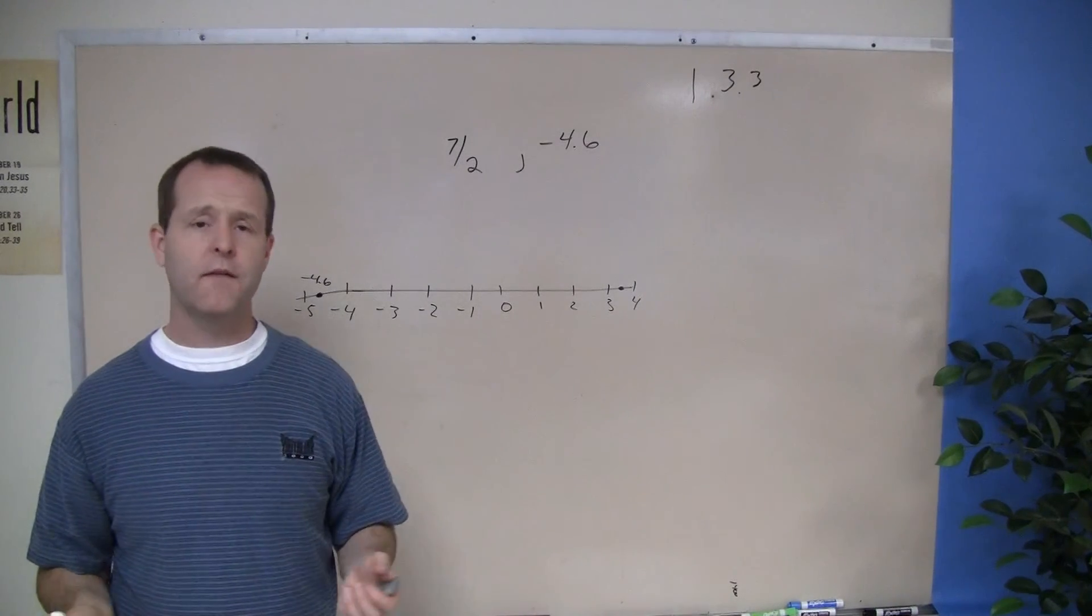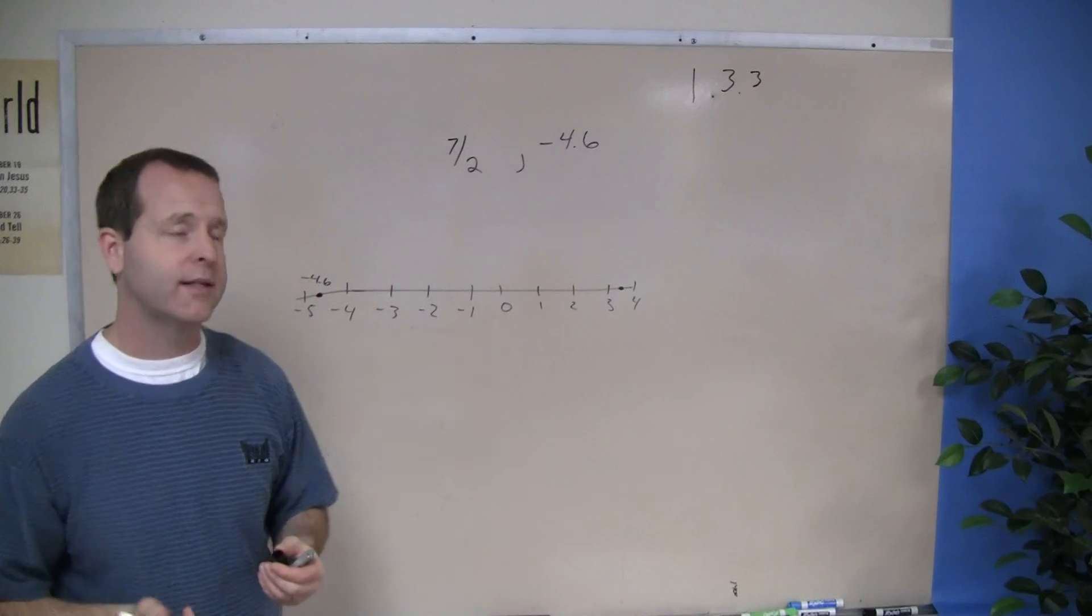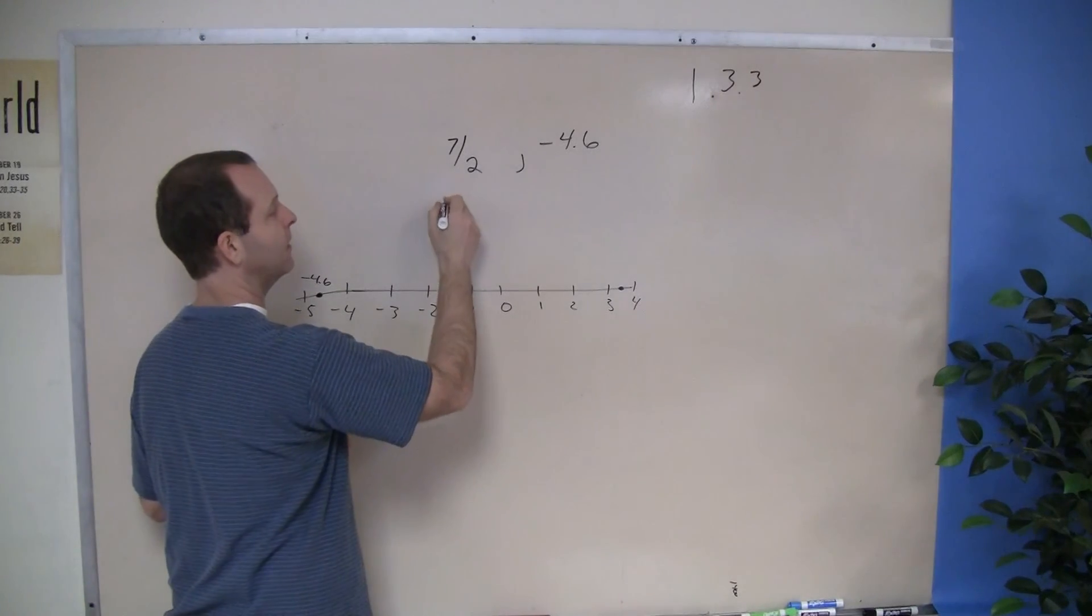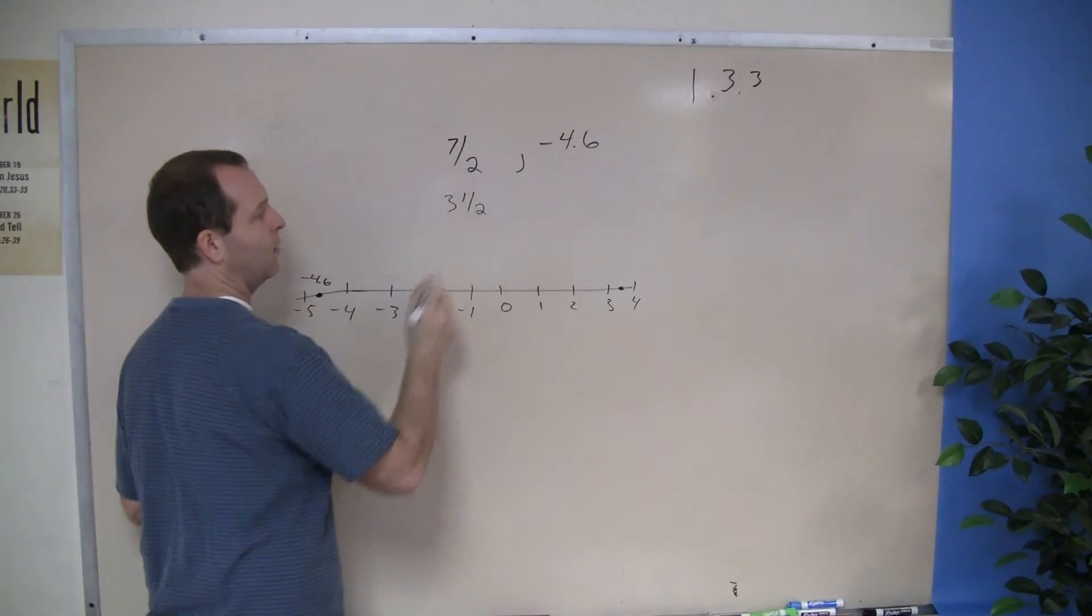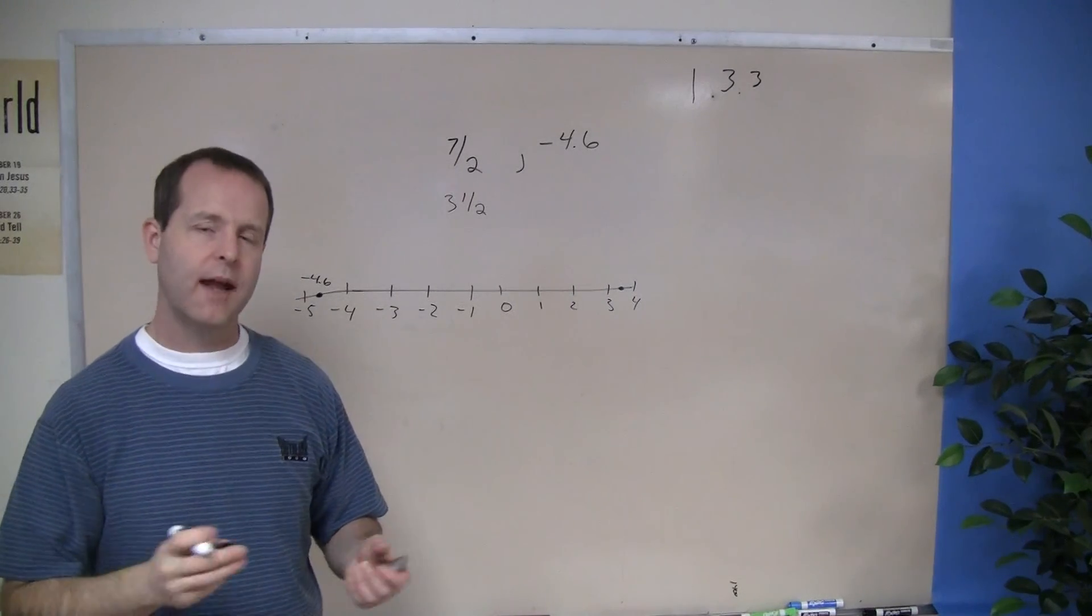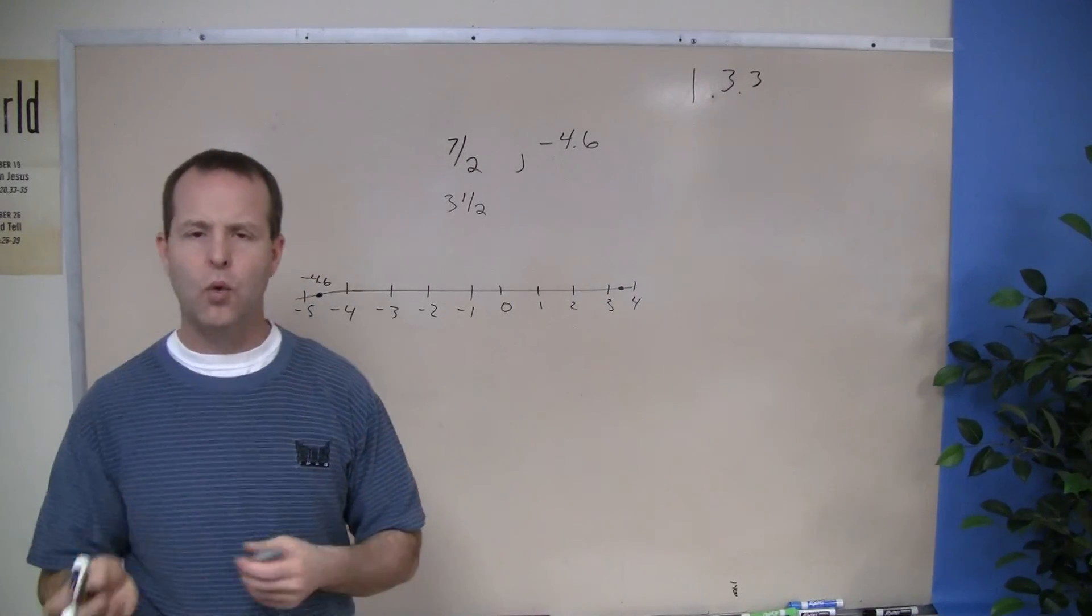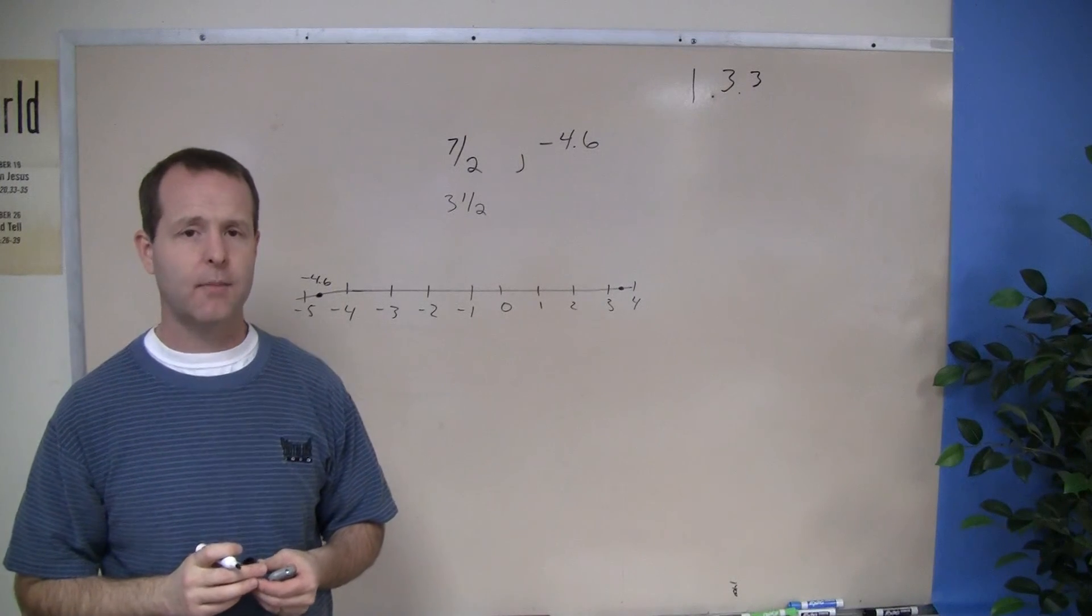Sometimes you might want to convert the numbers in your head to get an idea of what's happening. Like the 7 halves, well, it's the same thing as the mixed number 3 and a half. And that might help you have an idea relationally where they exist on the number line.